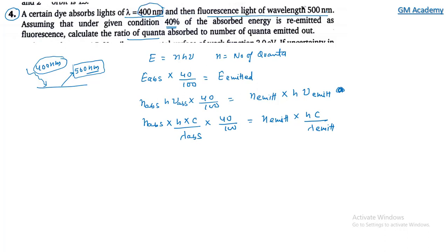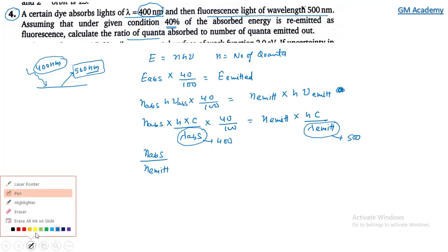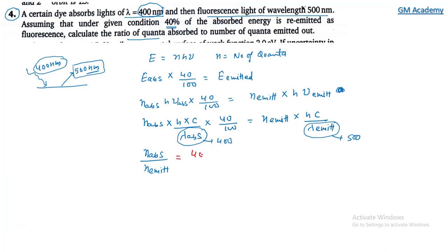We are given λ(absorbed) = 400 nanometer and λ(emitted) = 500 nanometer. The ratio of quanta absorbed to quanta emitted becomes 400/500 × 100/40, which when solved gives us 2. So the correct answer for the ratio is 2.